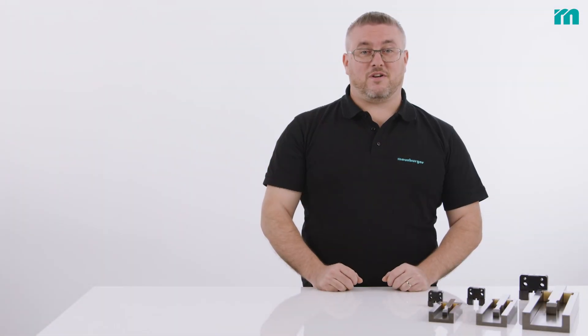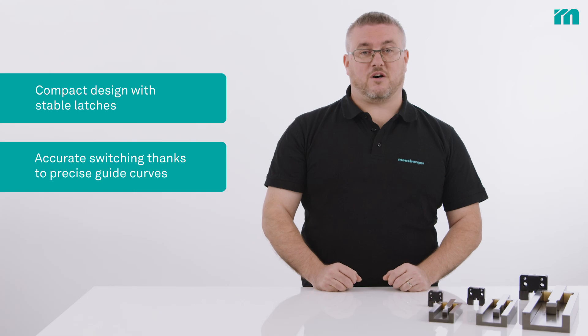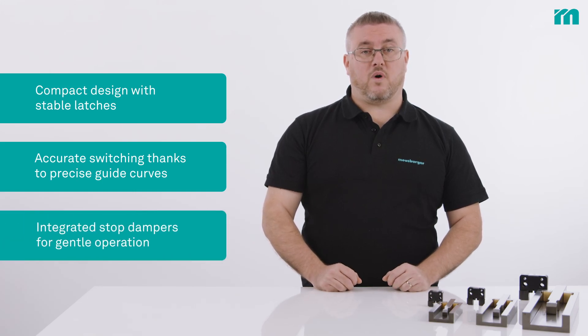Let's now take a look at the advantages of the E1820 flat latch lock: a compact design with stable, large surface latches, accurate switching thanks to precise hard-milled guide curves, and integrated stop dampers for quiet and gentle operation.